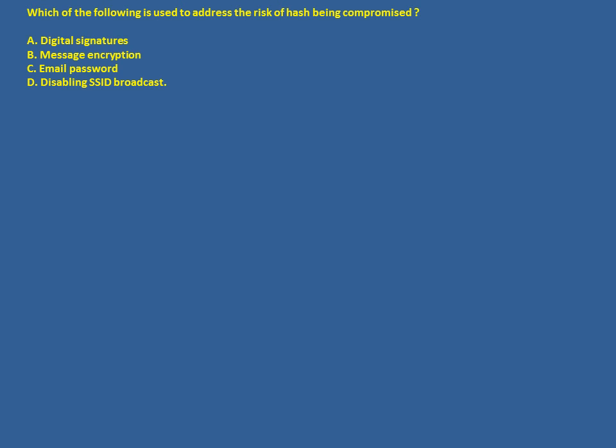Question: which of the following is used to address the risk of a hash being compromised? As we have seen, a digital signature is created in two steps: first, create the hash of the message; second, encrypt the hash to protect it from being compromised.